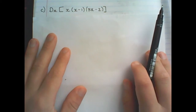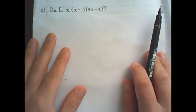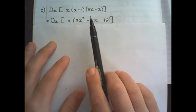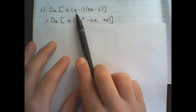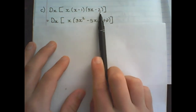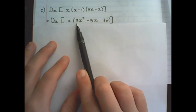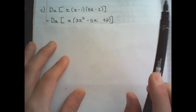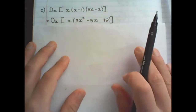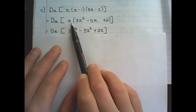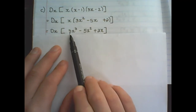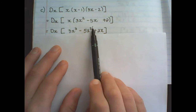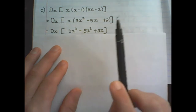Before we can apply the rule of differentiation we need to multiply out. So (x minus 1)(3x minus 2) becomes 3x squared minus 5x plus 2. Then I multiply x into the bracket, giving 3x cubed minus 5x squared plus 2x.